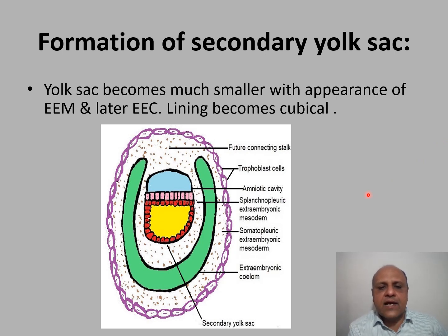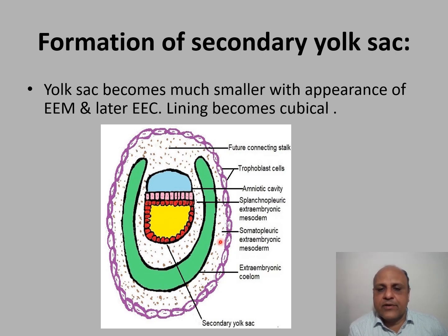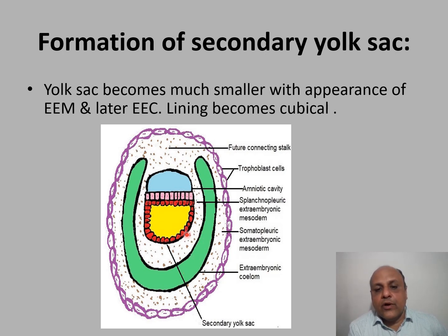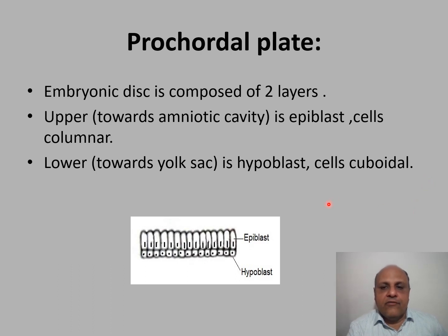With the appearance of extra-embryonic mesoderm and the extra-embryonic coelome cavity within it, the yolk sac becomes much smaller and its cells become cuboidal — we now call it the secondary yolk sac. So the primary yolk sac becomes the secondary yolk sac, which is represented by the yellow area in the diagram.